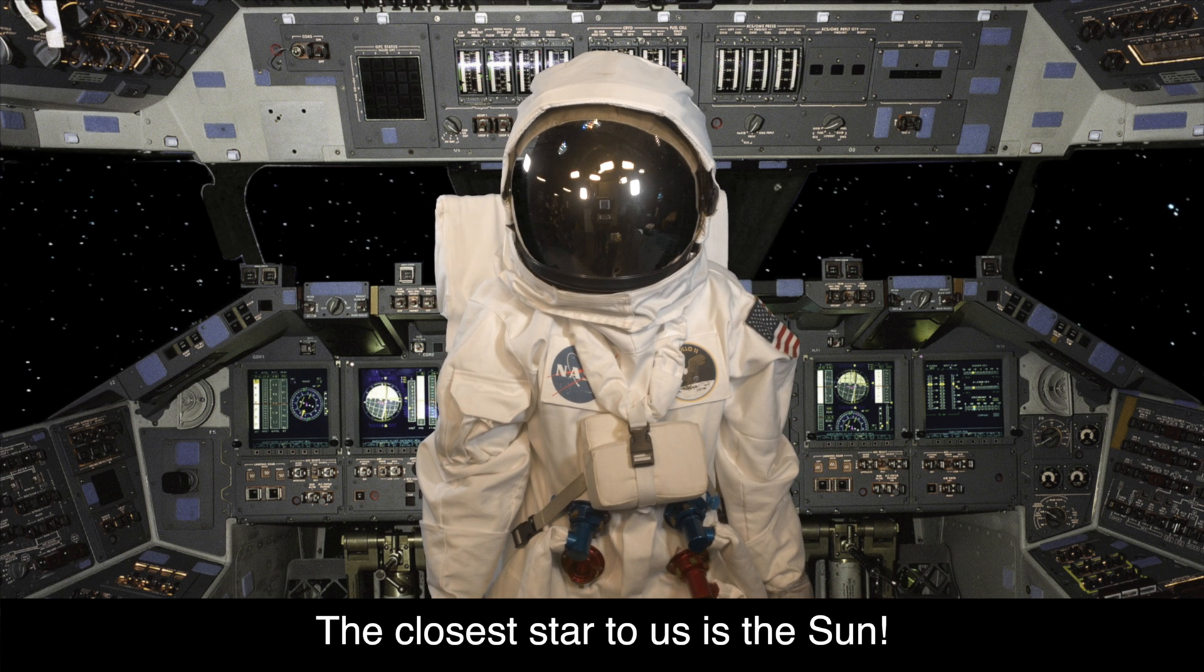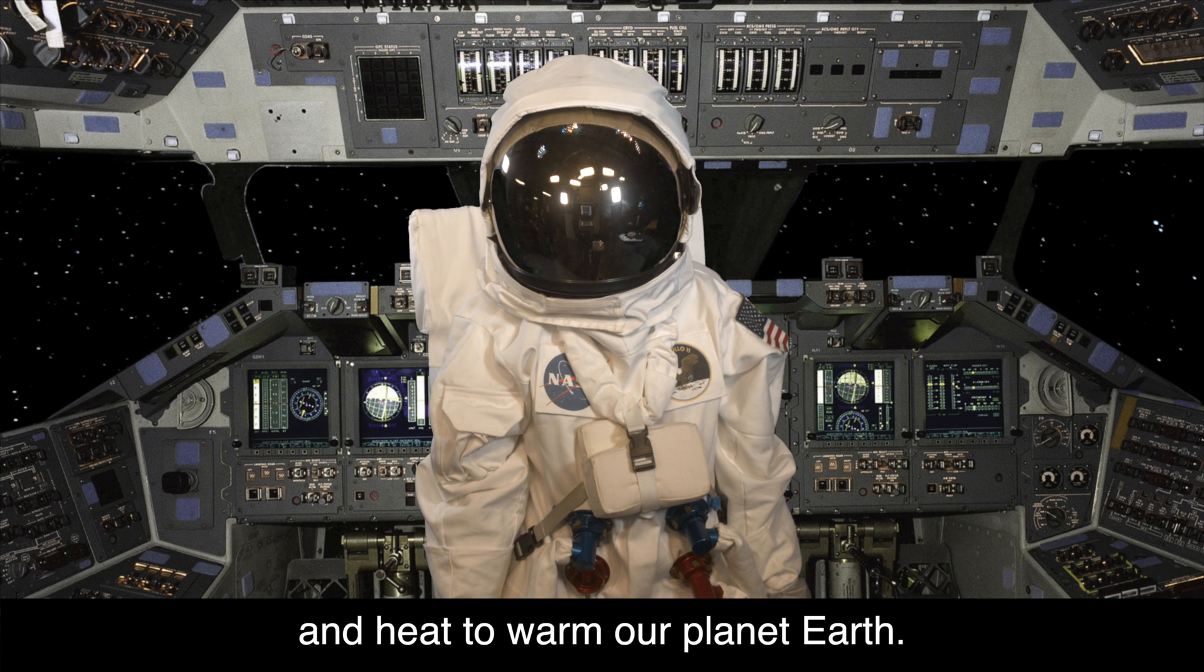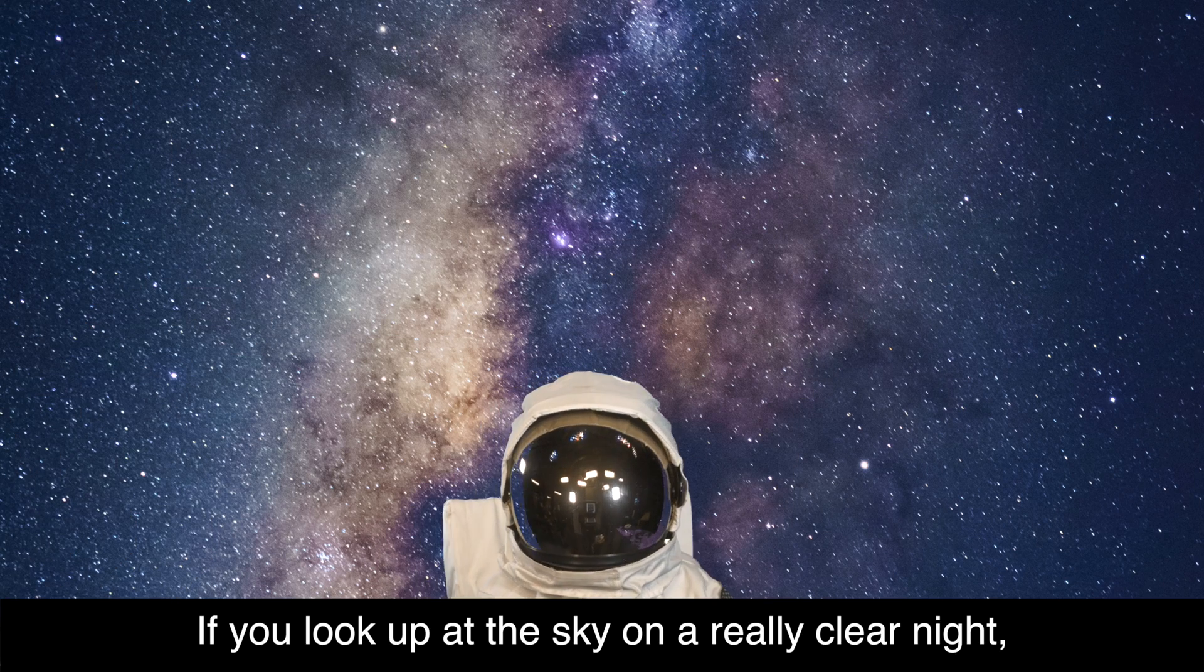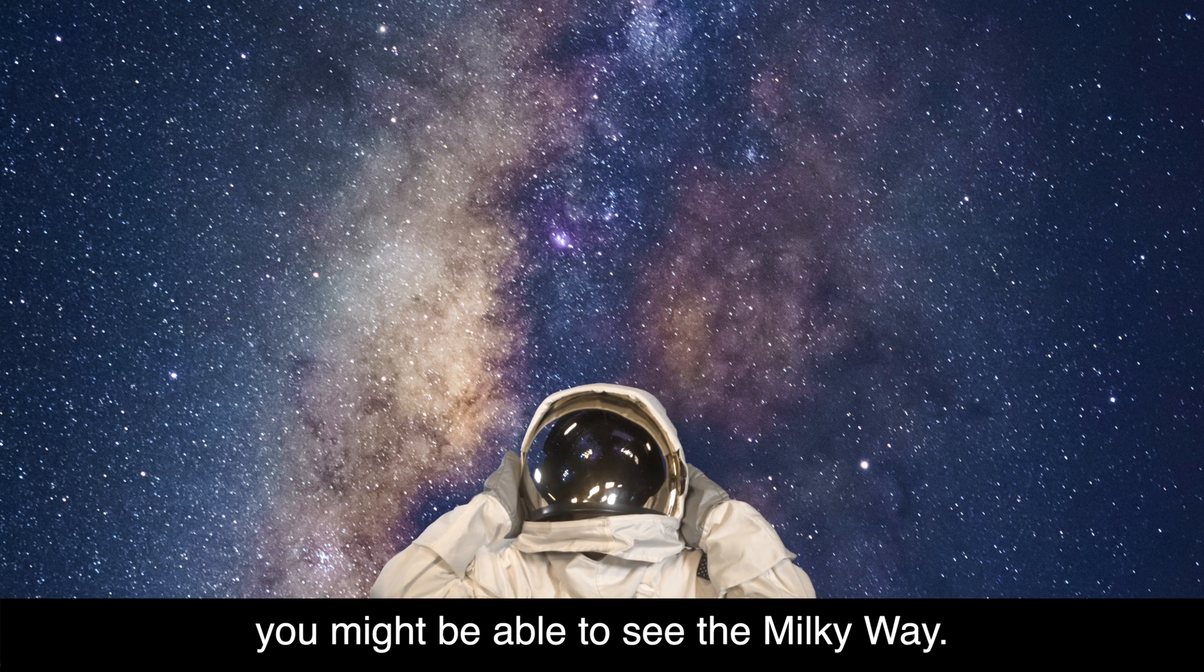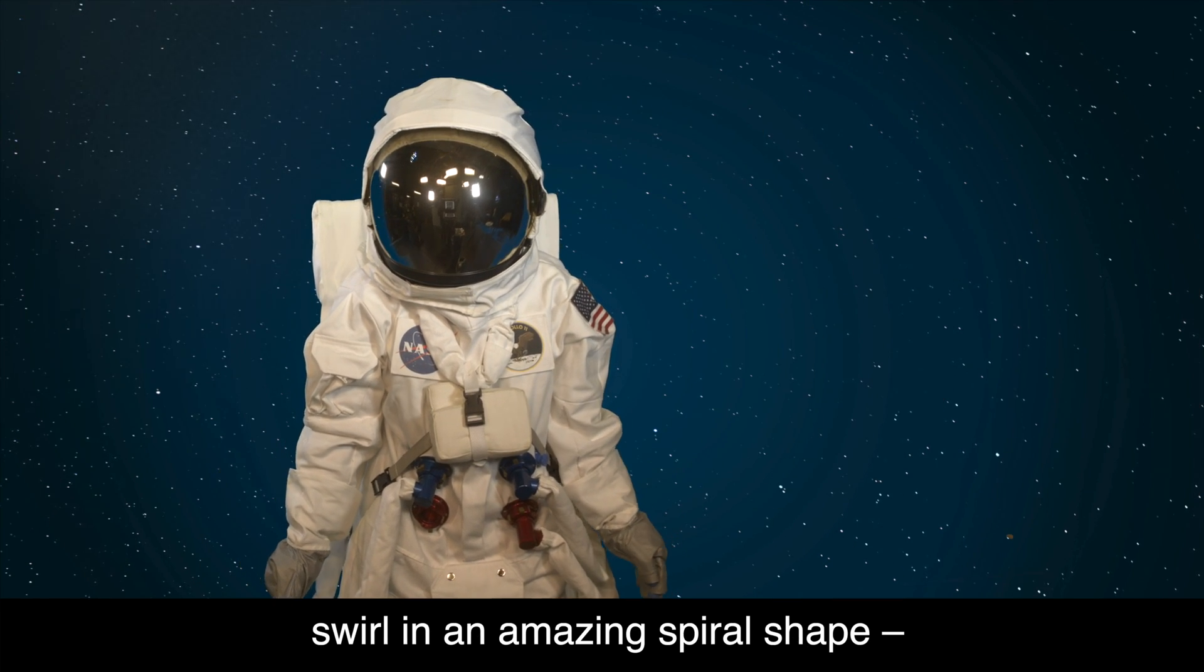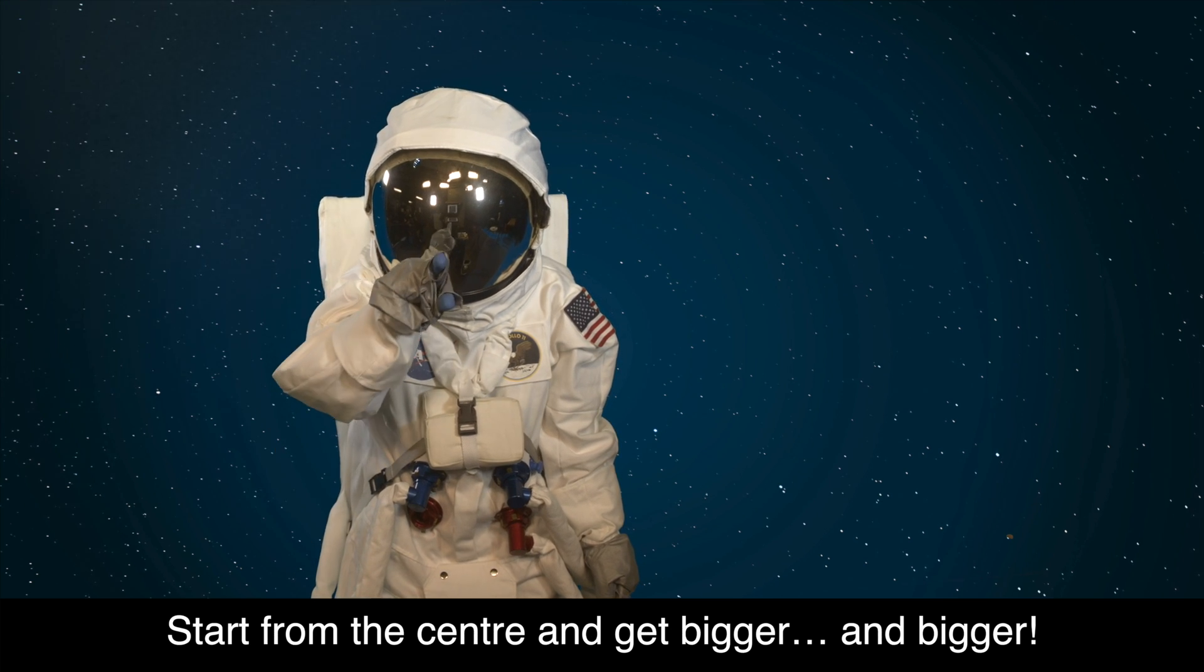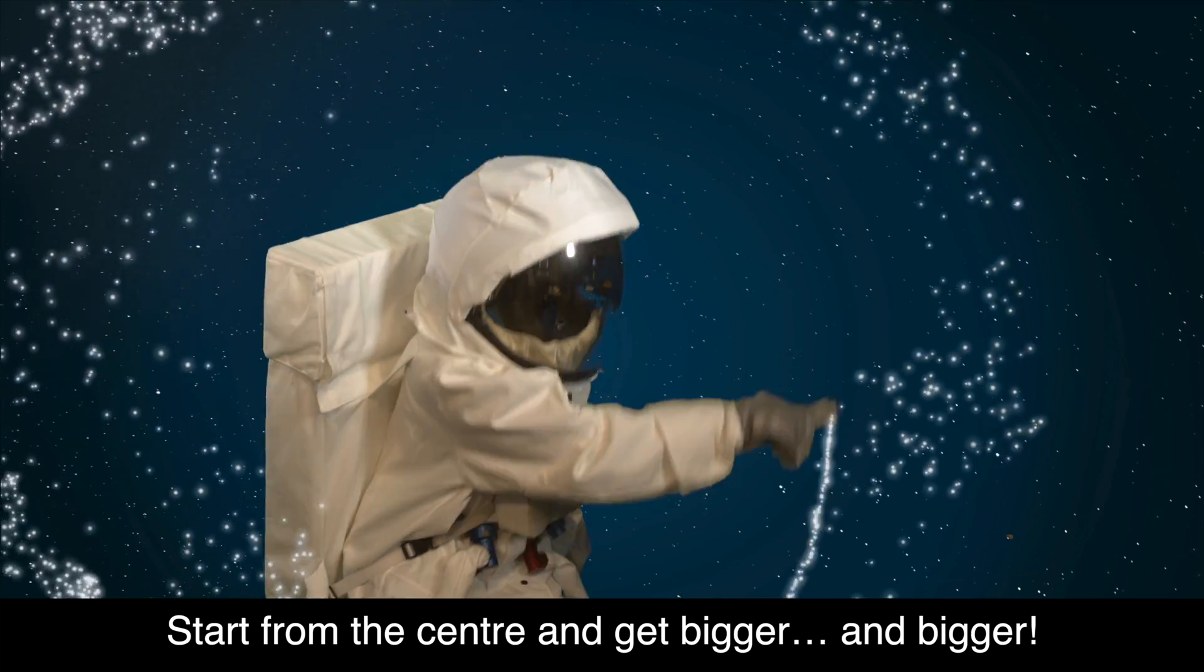The closest star to us is the sun. The sun gives us light and heat to warm our planet Earth. Some of the other stars we can see are part of a galaxy called the Milky Way. If you look up at the sky on a really clear night, you might be able to see the Milky Way. The stars in the Milky Way swirl in an amazing spiral shape. Can you draw a spiral shape? Try drawing a big spiral in front of you. Start from the centre and get bigger and bigger and bigger!